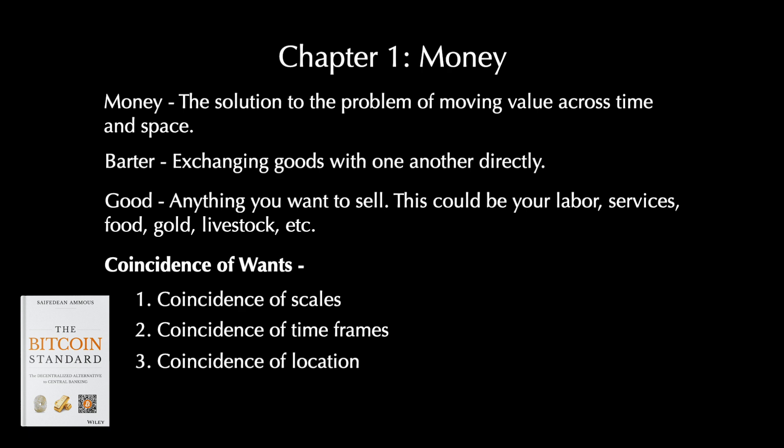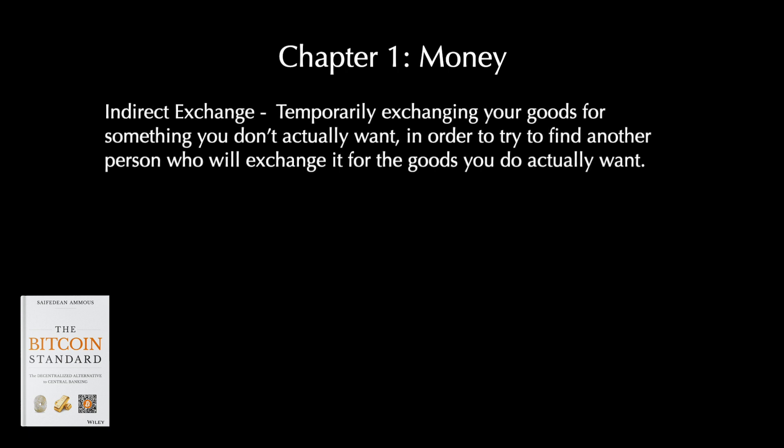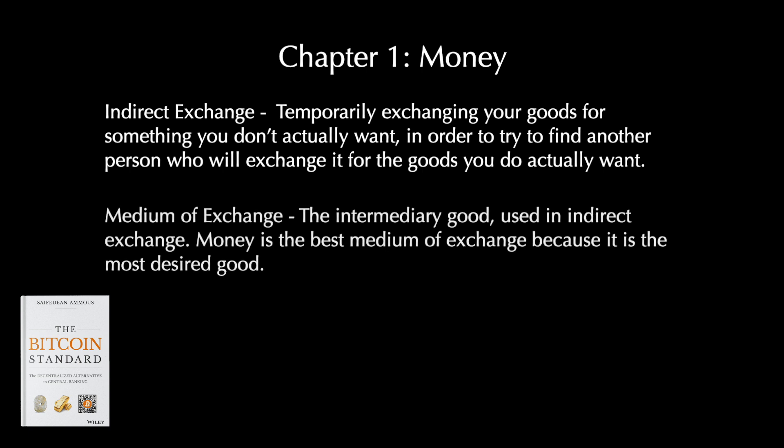Imagine wanting to sell shoes for a house. You can't buy the house in small pieces, nor does the homeowner want an enormous amount of shoes equal in value to the house. This problem compounds if the good is perishable or non-divisible, like food or livestock. The only way around this problem is through indirect exchange, which means you temporarily exchange your goods for something you don't actually want, in order to find another person who will exchange it for the goods you do actually want. That intermediary good is called a medium of exchange.